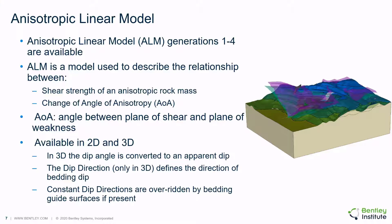Positive angles define a clockwise rotation from the negative x-axis. Note that the angle convention for dip angle and dip direction is different than the model rotation angle — it's the same as the convention for wedges, so it may be helpful to define a temporary wedge for reference to ensure that the bedding geometry is defined correctly. Constant dip directions defined in the material dialogues are overridden by bedding guide surfaces if present.